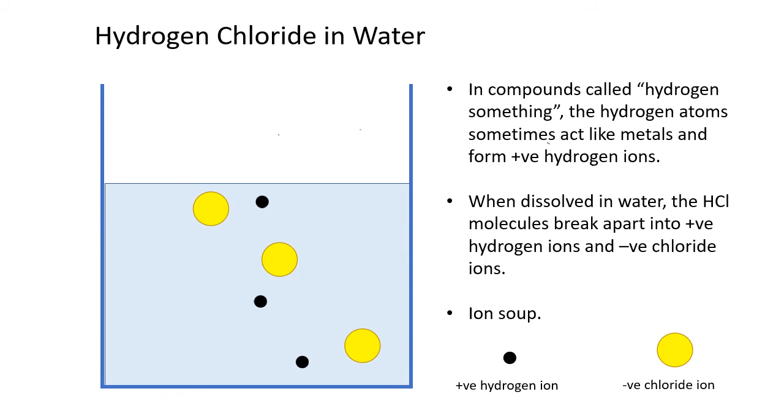Once again, we have an ion soup. Even though technically hydrogen chloride would not be considered an ionic compound, when compounds named hydrogen something dissolve in water, we can assume they act like ionic compounds and separate into positive hydrogen ions, and the rest of the compound becomes a negative ion. Once again, we can write a simple equation to describe what happened there. Hydrogen chloride, HCl, when dissolved in water breaks up into positive hydrogen ions and negative chloride ions.